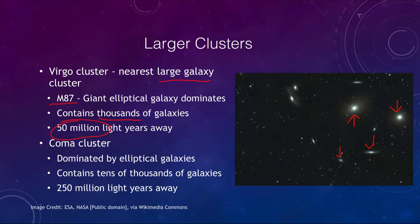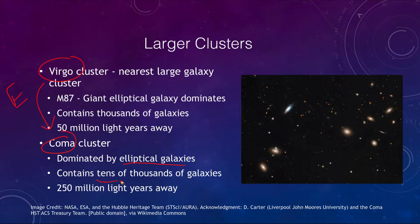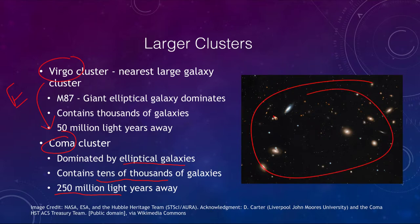There are even larger clusters — we have the Coma cluster, which is even larger and also dominated by elliptical galaxies. This is an interesting difference from our local group: large clusters like Coma and Virgo are dominated by elliptical or E-type galaxies, whereas our local group had spiral galaxies as the three most prominent members. The Coma cluster contains tens of thousands of galaxies and is 250 million light years away, and nearly everything in its images is a galaxy part of that cluster.